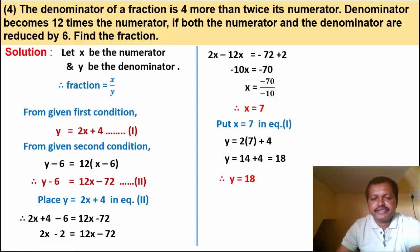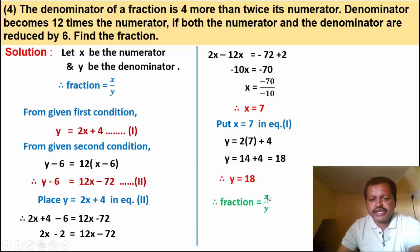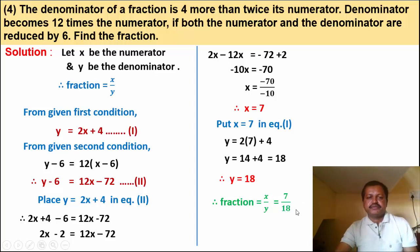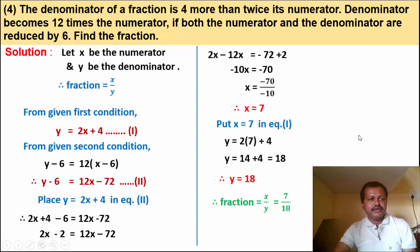So the fraction equals x upon y equals 7 upon 18. The fraction is 7/18. Now we look at example number 5.